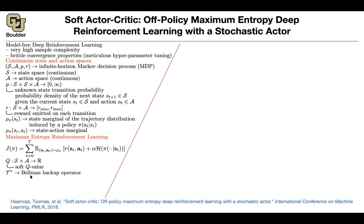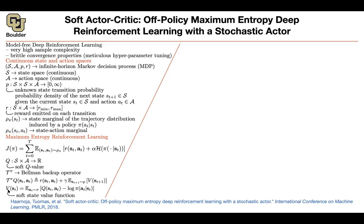You still have a Bellman equation, and you have to prove that it holds for this problem. Tau-pi is your Bellman backup operator. The Bellman backup operator is your reward plus gamma times the expected future values, where this is a soft state value function. Why is it soft? The word 'soft' is coming from the entropy term — it shows up in your Q or in your V, and it's the extra term that complicates the mathematics a little bit.